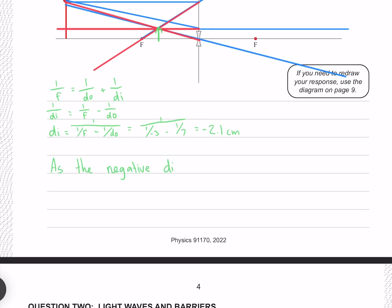And so as the negative DI and ray diagram show, the image is virtual and therefore cannot be projected onto a screen.